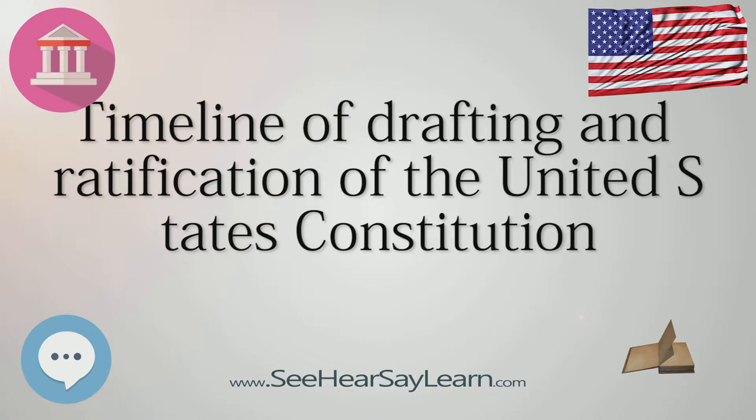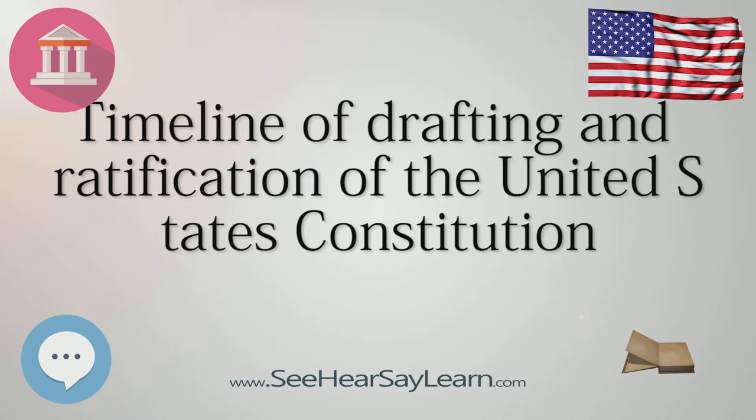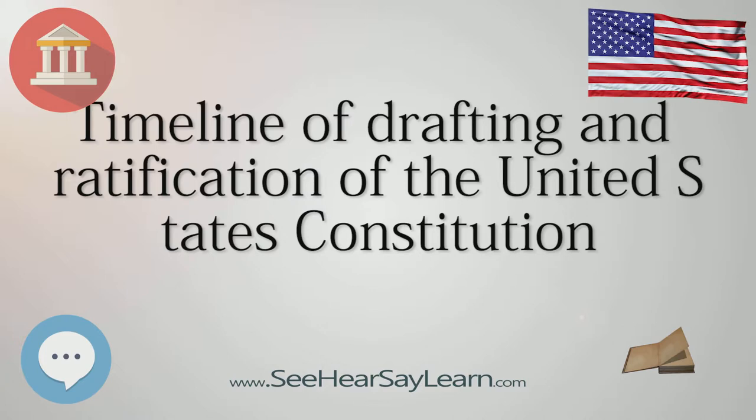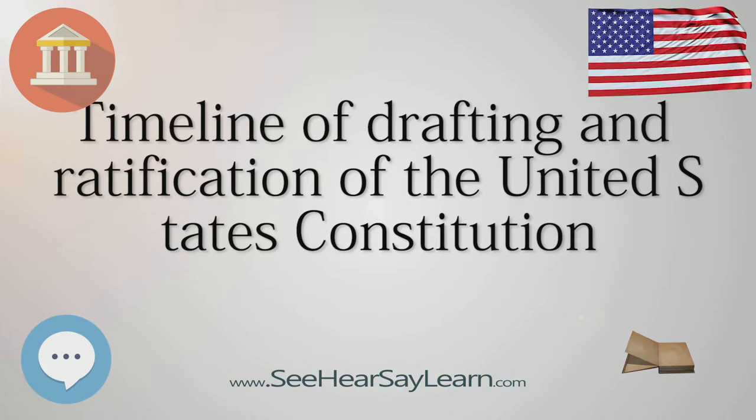January 9: Ratifying Convention Begins in Massachusetts. February 6: Massachusetts becomes the sixth state to ratify the Constitution, 187-168. In addition to ratifying the Constitution, Massachusetts requests that 19 alterations be made to it.